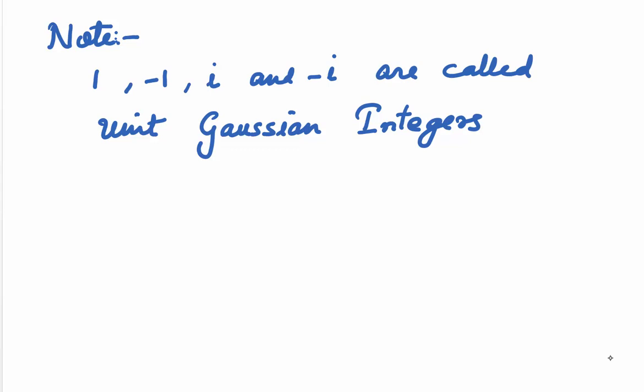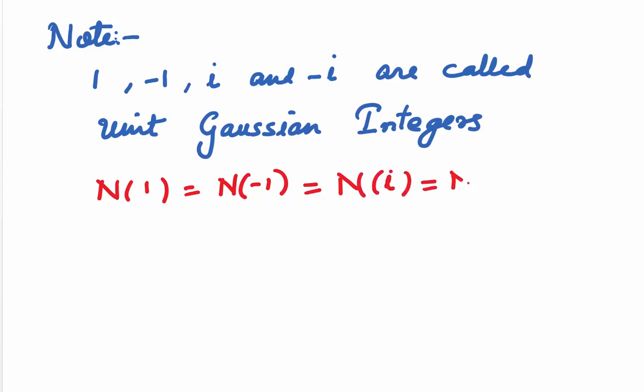Let us now see what unit Gaussian integers are. 1, minus 1, i, and minus i are called unit Gaussian integers. You can check that the norm of 1, norm of minus 1, norm of i, and norm of minus i are all 1, which means they are all one unit away from the origin in the Argand plane.